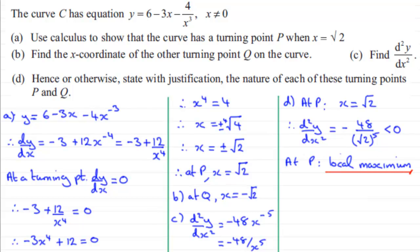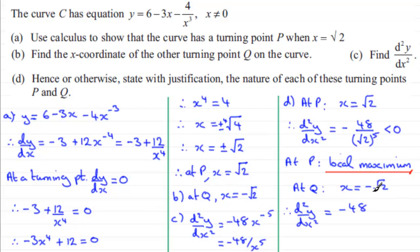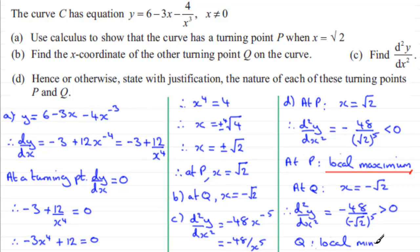At Q, we test x equals negative root 2. Substituting into d²y/dx² gives minus 48 divided by negative root 2 to the power 5. A negative number raised to an odd power is negative, so we have minus 48 over a negative number, which gives a positive result — greater than zero. Therefore Q is a local minimum.